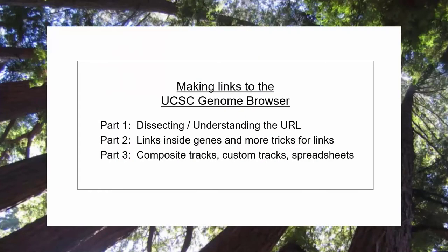In the first installment of the series, we saw how to pick apart the UCSC browser URL, how to turn on specific tracks of interest, get control of visibility level, how to hide undesired tracks, and how to navigate to locations in the genome using gene names or SNP identifiers.